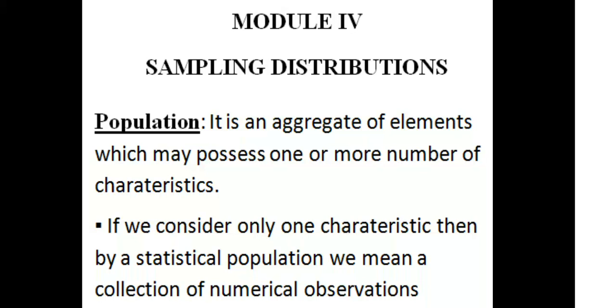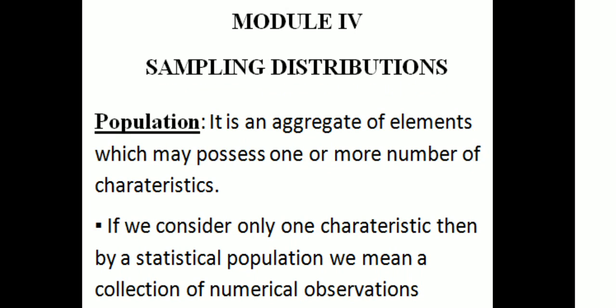For the next chapter on sampling distribution, the fourth module on sampling distribution. First of all, we have the statistical words and terms of caution. Population: it is an aggregate of elements which may possess one or more characteristics.